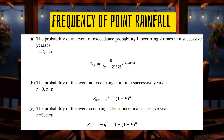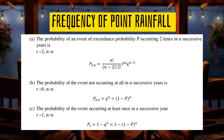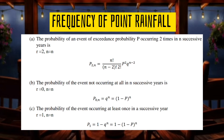For letter A, the probability of an event occurring two times in n successive years: since R equals 2 and n equals n, P2n equals n factorial over (n minus 2) factorial times 2 factorial, times P squared times Q raised to n minus 2. For letter B, the probability of an event not occurring at all in n successive years: since R equals 0, P0n equals Q raised to n, or (1 minus P) raised to n. For letter C, the probability of occurring at least once in n successive years: P1 equals 1 minus Q raised to n, or 1 minus (1 minus P) raised to n.